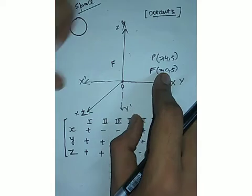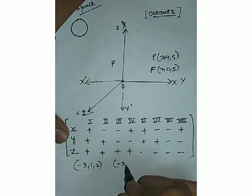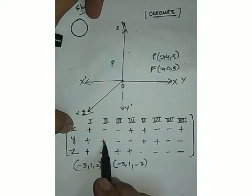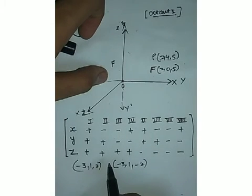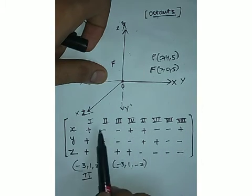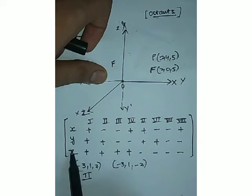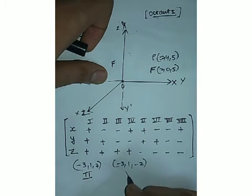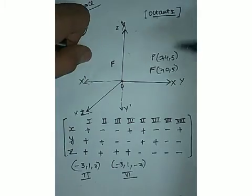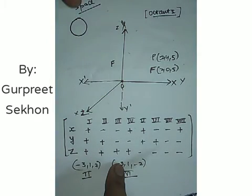In Example 2, we have to find the octant in which points (−3, 1, 2) and (−3, 1, −2) are lying. For (−3, 1, 2): x is negative, y is positive, z is positive — from the table, this is the second octant. For (−3, 1, −2): x is negative, y is positive, z is negative — this corresponds to the sixth octant. If you know how to build the sign table, these problems are very straightforward.